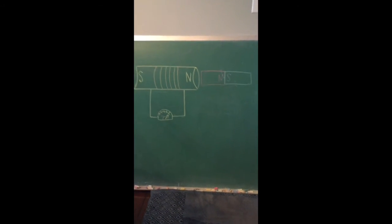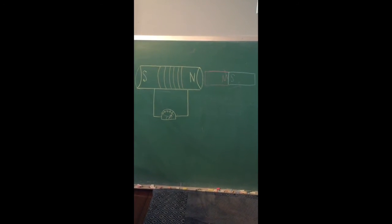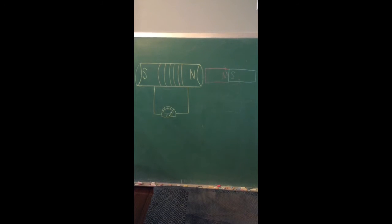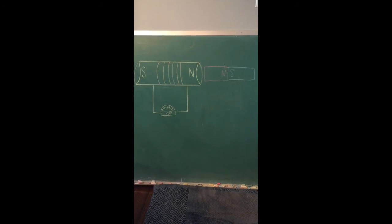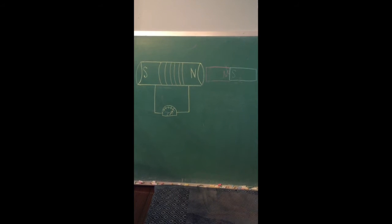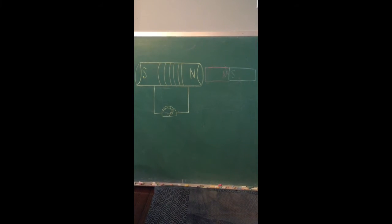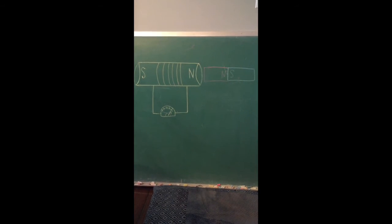The AC generator uses the laws of induction and consists of a coil of wire rotating a magnetic field. As the coil rotates, it cuts the magnetic flux generating an EMF similar to electromagnetic induction.